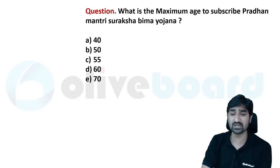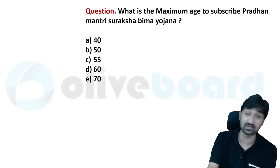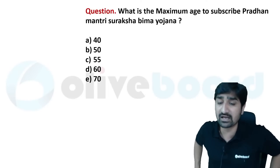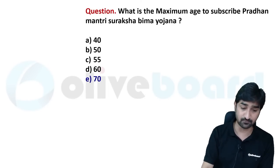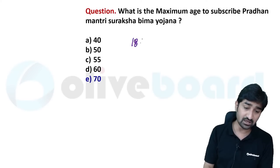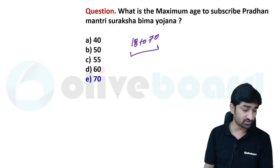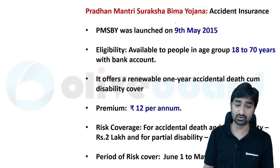Pradhan Mantri Suraksha Bima Yojana — what is the maximum age to subscribe? The minimum age is 18 and maximum is 70. It is an accident insurance policy with a yearly premium of 12 rupees per annum, and the risk cover is 2 lakh rupees. It was launched on 9th May 2015. The policy cycle runs from June to May.